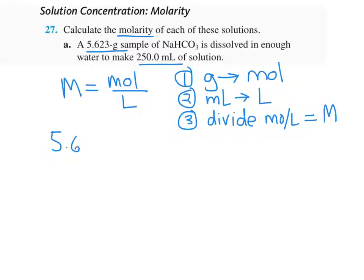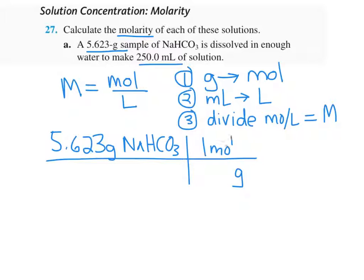Okay, so step one, we have 5.623 grams of NaHCO3, baking soda. And we are going grams to moles. So we got to look up the molar mass and complete that.